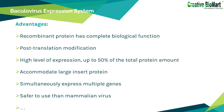The main advantages of the baculovirus system include: (1) recombinant proteins have complete biological function, such as correct protein folding and disulfide bonds; (2) post-translational modification; (3) high level of expression, up to 50% of the total protein amount; (4) ability to accommodate large insert proteins; and (5) ability to simultaneously express multiple genes. The main drawback is that exogenous protein expression is under the control of the very late viral promoter, where the cells begin to die due to viral infection. Insect expression systems are normally used for production of membrane proteins, although the glycosylations may differ from those found in vertebrates. In general, it is safer to use than mammalian virus systems, as it has a limited host range and does not infect vertebrates without modifications.